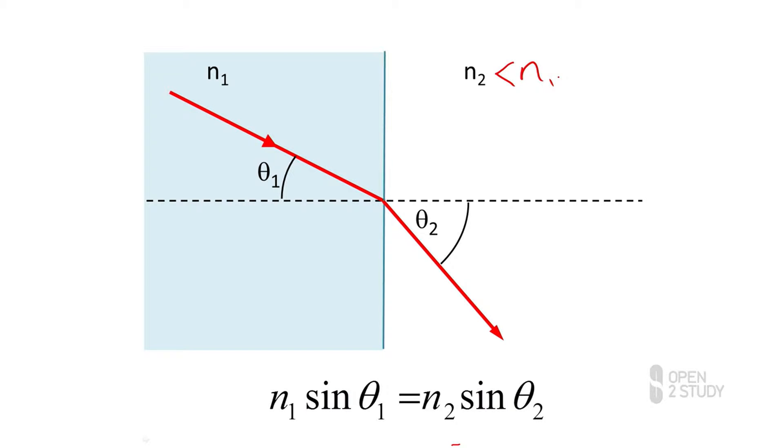And unlike before, where the refracted ray bent closer to the normal, now the refracted ray bends away from the normal. The relationship between those angles, theta1 and theta2, is given by Snell's law at the bottom of the diagram.